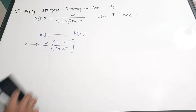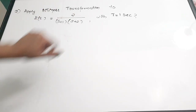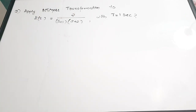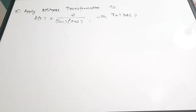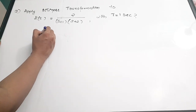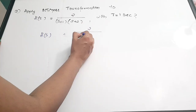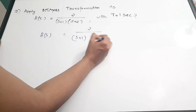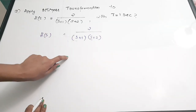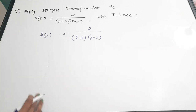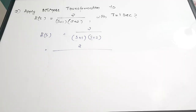Now let's do this question by applying bilinear transformation. The question is: apply bilinear transformation to H(s) = 2 / [(s+1)(s+2)] with T = 1 second. First, I'll write down the transfer function: H(s) = 2 / [(s+1)(s+2)], and I'm going to replace s with (2/T) × (1 − z⁻¹)/(1 + z⁻¹).